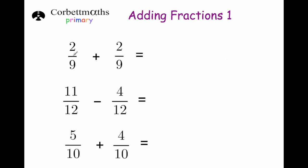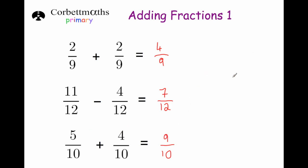Let's look at some examples. Two ninths plus two ninths: keep the denominator the same and add the numerators — two plus two is four. Eleven twelfths take away four twelfths: keep the denominator the same and subtract the numerators — eleven take away four is seven, so the answer is seven twelfths. Finally, five tenths plus four tenths: keep the denominator the same, five plus four equals nine. So to add or subtract fractions with the same denominators, keep the denominator the same and just add or subtract the numerators.